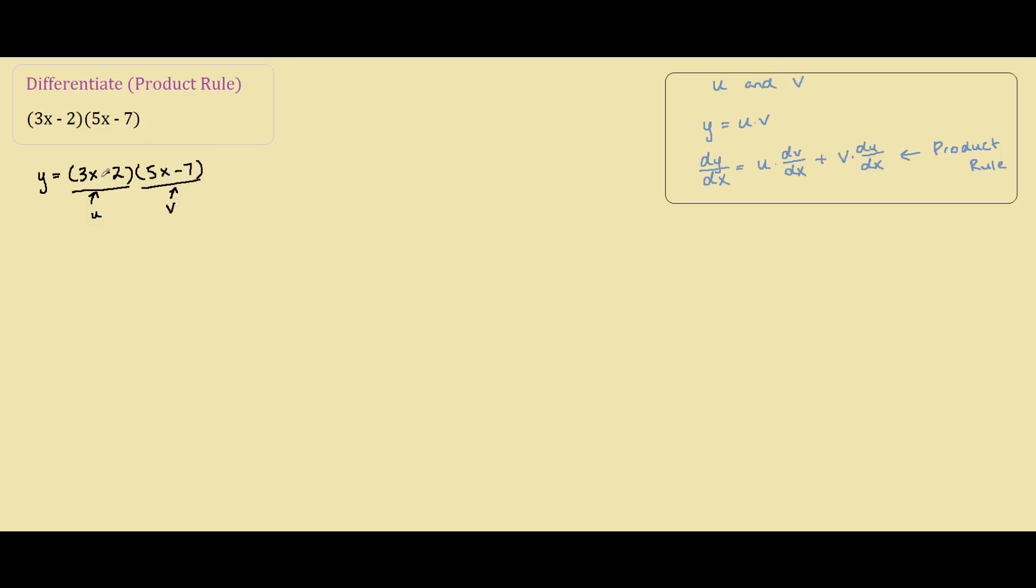So you can see already that this is in similar form to the product rule. So following the product rule here, dy/dx would equal to, first of all we have u, so we call this one u, (3x-2) times dv/dx. Alright so now v is over here, so dv/dx is differentiation of 5x-7, so it's just 5.